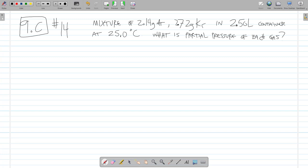9C, question 14. If we have a mixture of gases, 2.14 grams of argon and 2.72 grams of krypton, in a 2.5 liter container at 25 degrees C, what is the partial pressure of each gas and the total pressure of the mixture?